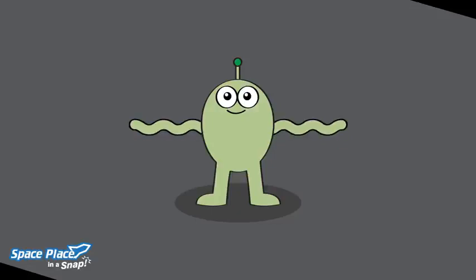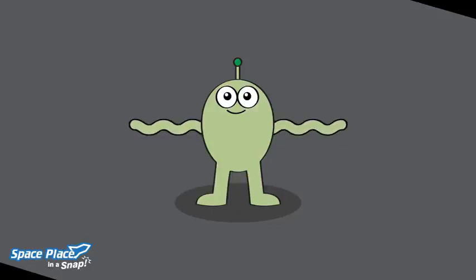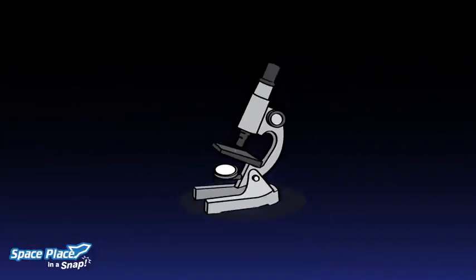We don't know what living things on other planets would look like. And they might be so small they could only be seen with a microscope.